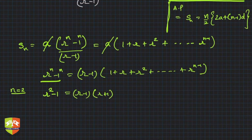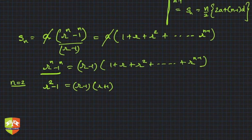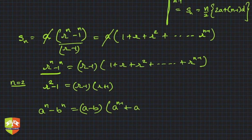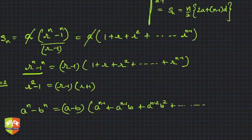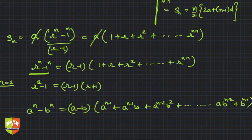So it works for any... the general identity is this: a^n - b^n = (a-b)(a^(n-1) + a^(n-2)b + a^(n-2)b² + ... + ab^(n-2) + b^(n-1)). This is the identity.